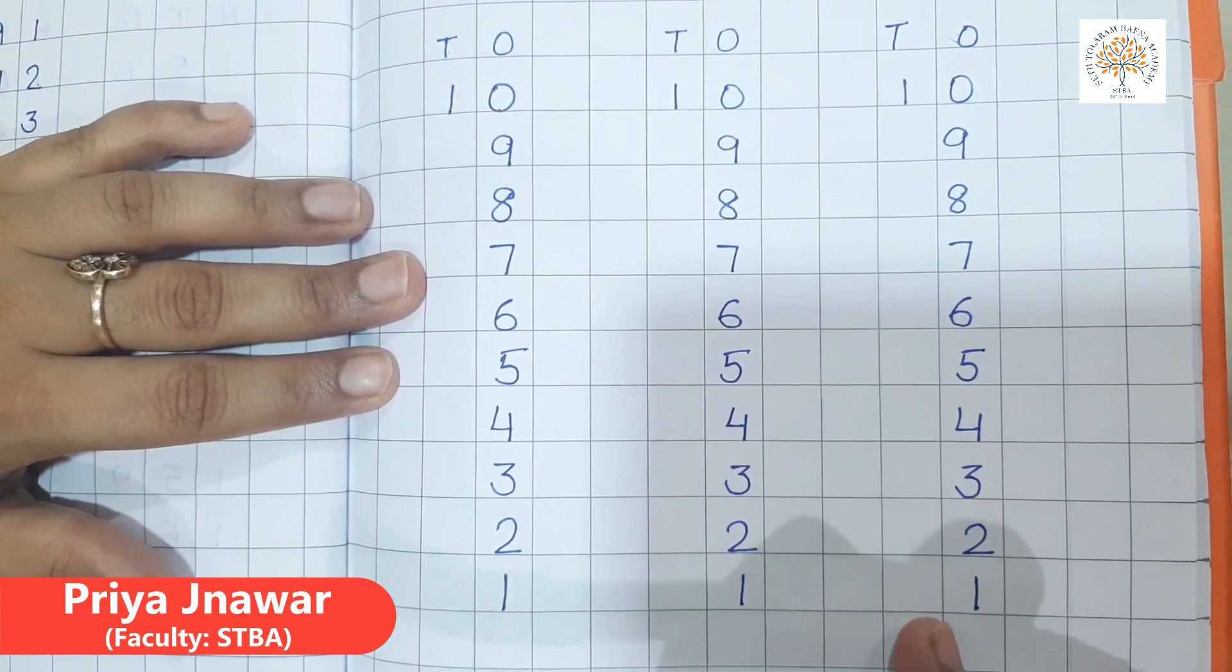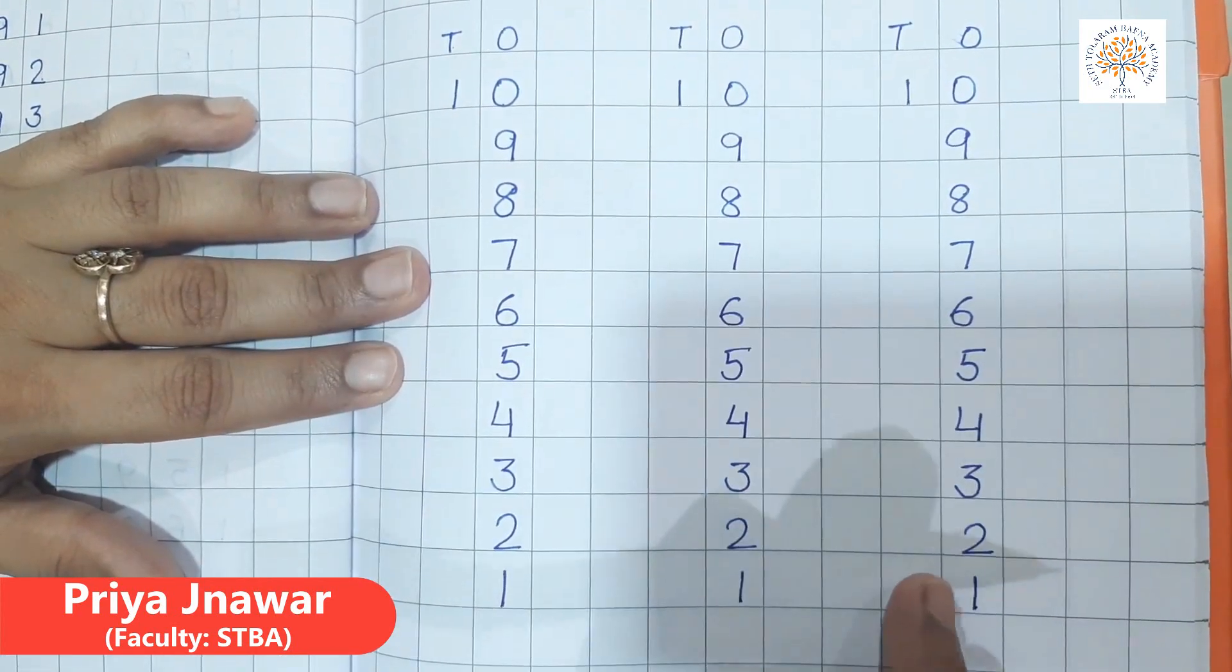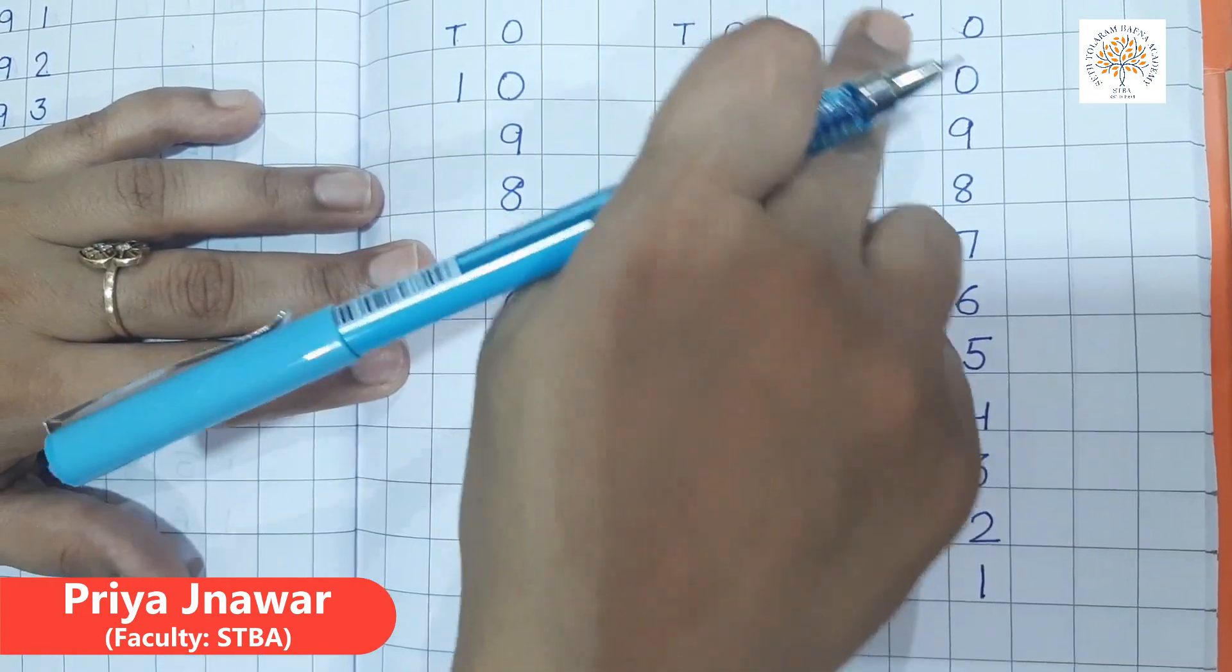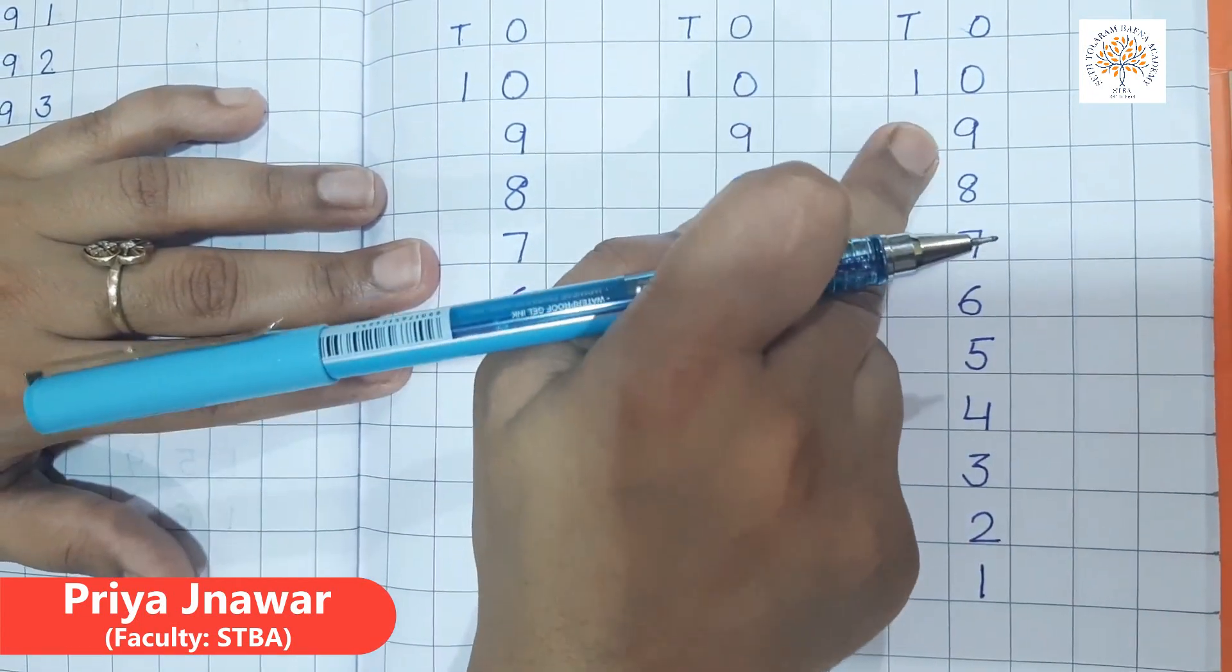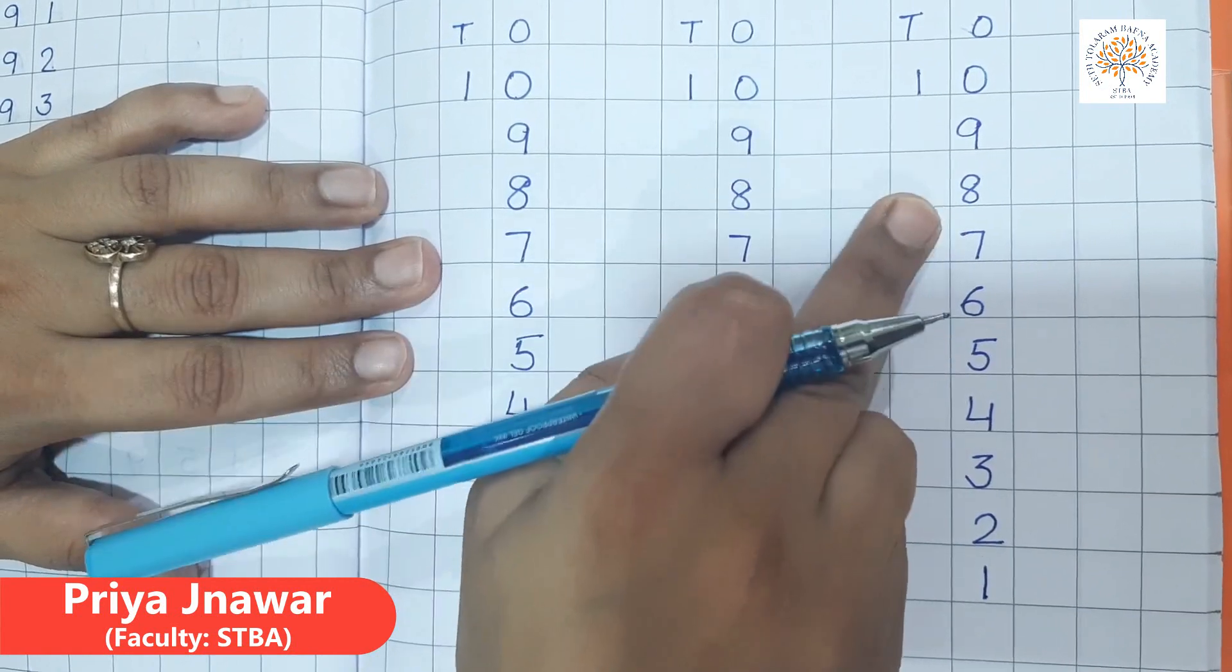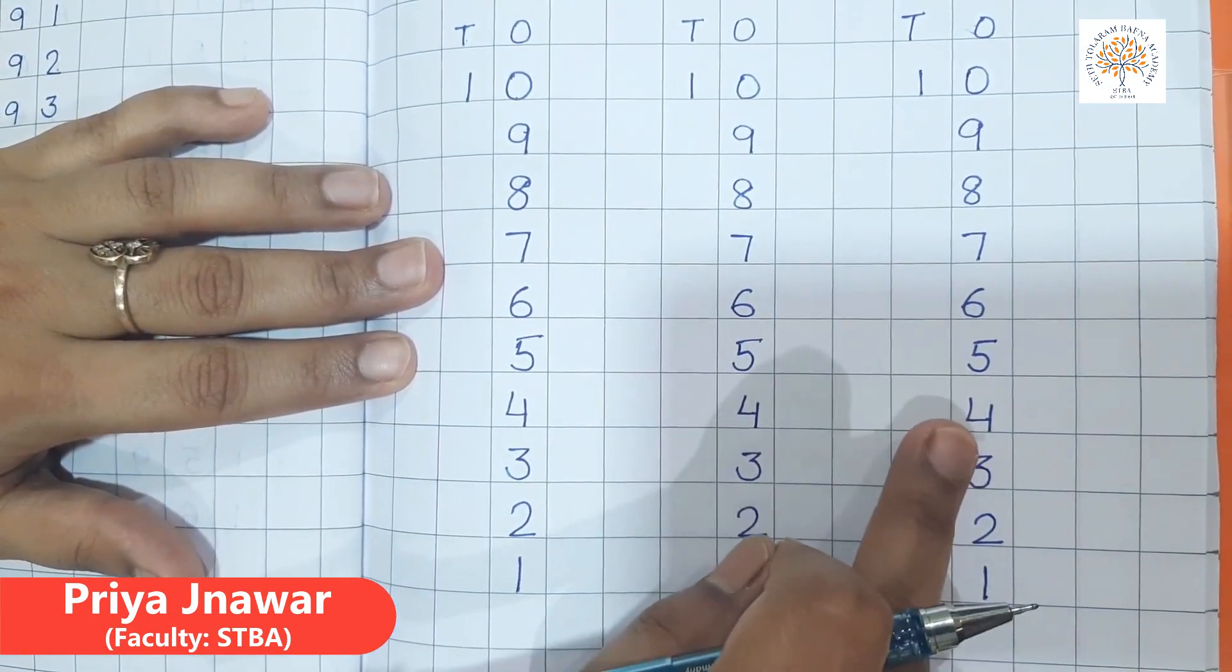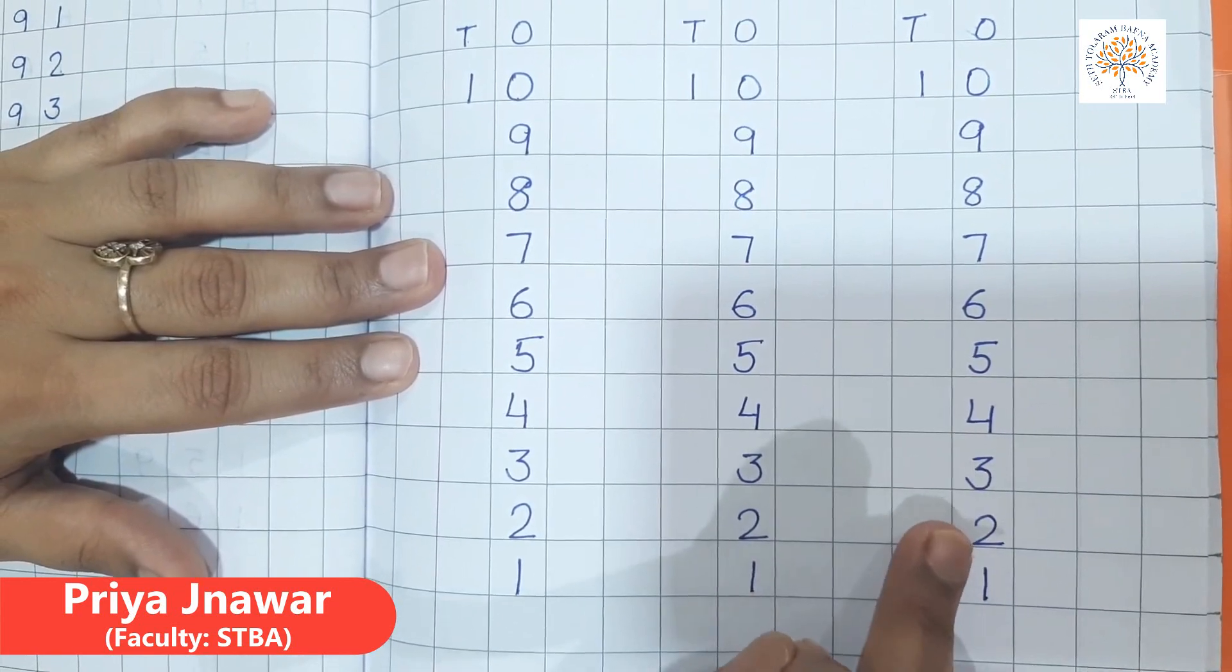If you will see from downward side, this will be forward counting: 1, 2, 3, 4, 5, 6, 7, 8, 9, 10. But now we have to write back counting. We will start with 10. That is 10, 9, 8, 7, 6, 5, 4, 3, 2, 1.